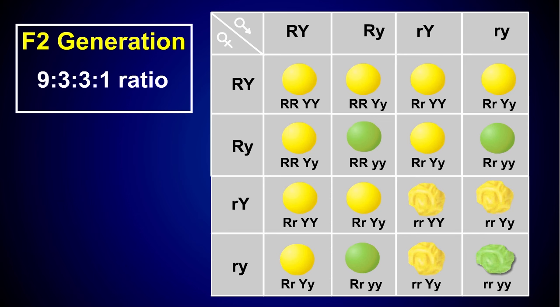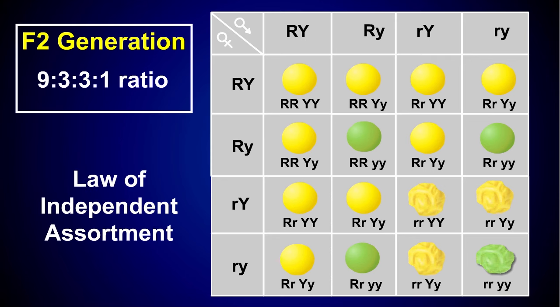Mendel was able to use this observation to determine that factors assort independently of other pairs of factors. This has become known as the law of independent assortment.